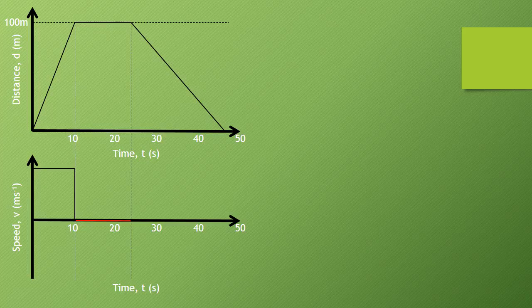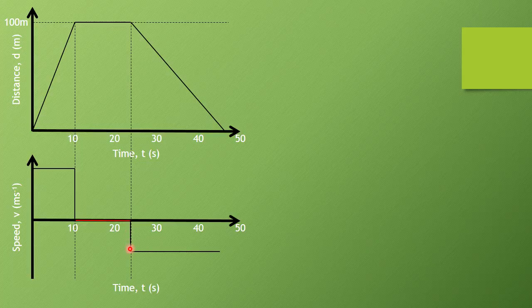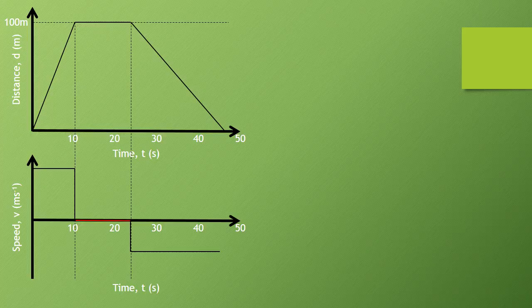When he's coming backwards towards the start, that is a negative value. Note it's also a horizontal line, but it is a smaller distance away from our axis compared to the first one, as he's moving at a slower speed as he comes back.